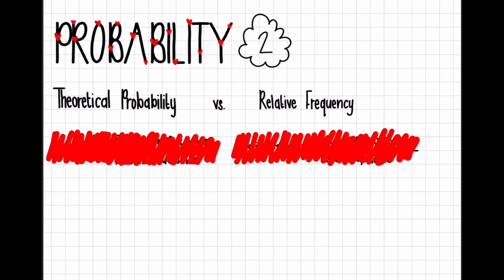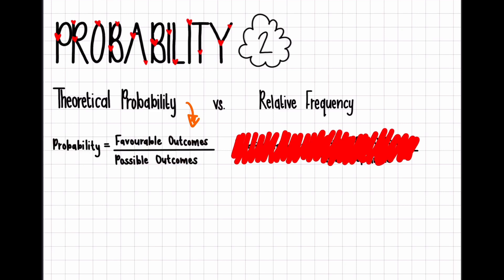If we start with theoretical probability, that's what we were working on in the previous video. Theoretical probability is the number of favorable outcomes over the number of possible outcomes. It's before an event has happened, before an experiment has occurred — it is in theory.